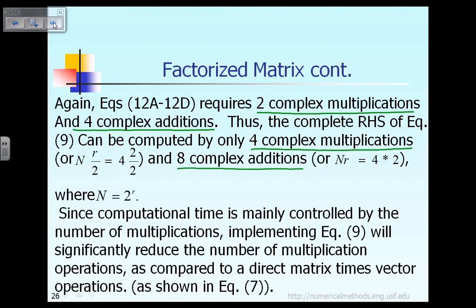This corresponds to the case where n equals 2 raised to the power 2, i.e., n equals 4. When you have four data points, you need four multiplications and eight additions to obtain vector c-theta. In general, for n data points, the number of multiplications involved is n times r over 2, where r is the power of 2 such that 2 raised to the power r equals n.